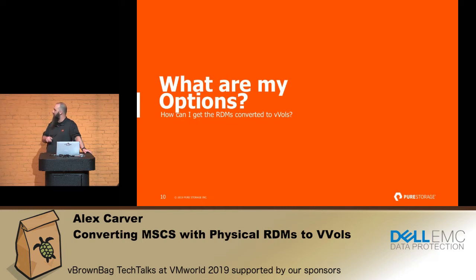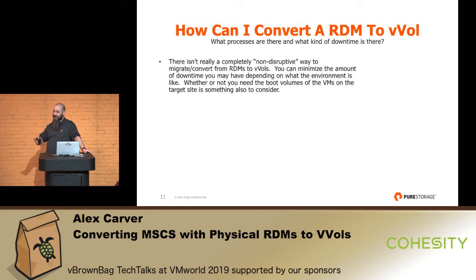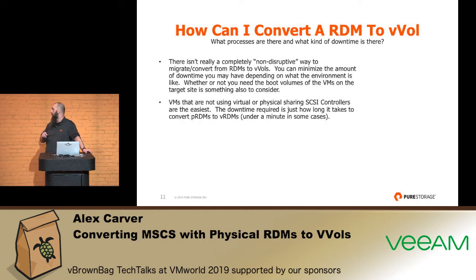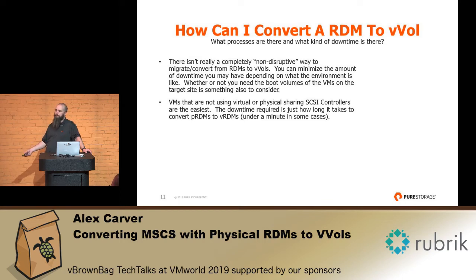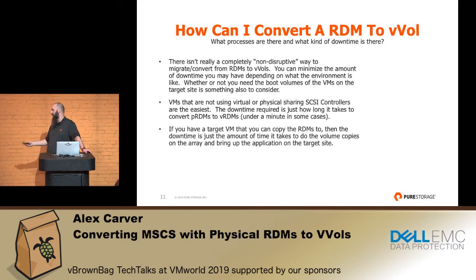So what are your options? How can I convert an RDM to a vVol? There are a couple of things to keep in mind — it's not really non-disruptive. There's no way to do this perfectly while staying online the entire time; there is going to be some downtime. Depending on how you're using RDMs, it depends on how long that could be. If you're not using virtual or physical sharing, the downtime is just the time to offline whatever role, application, or database you're using, remove the physical RDMs, add them back as virtual RDMs, and then online everything again. Once they're back as virtual RDMs, you can storage vMotion into vVols and you're done. But if you're using SCSI controllers in sharing mode, you can't do that.